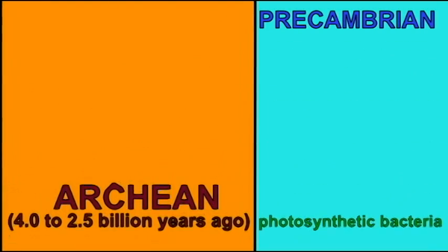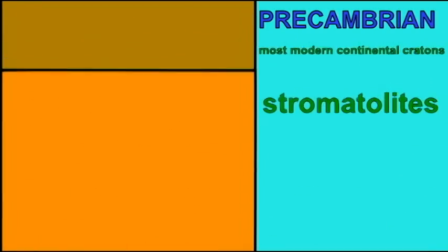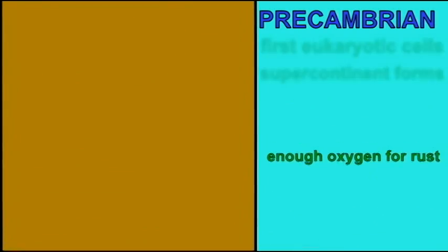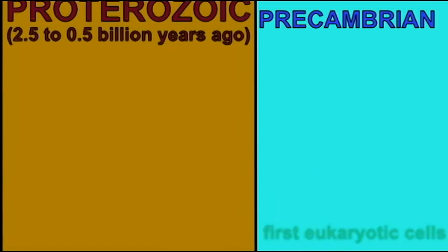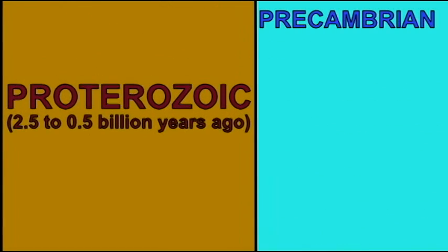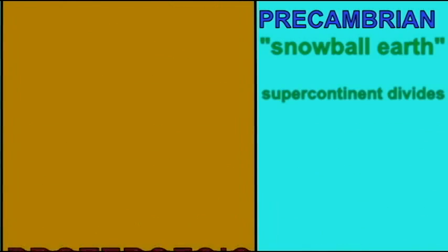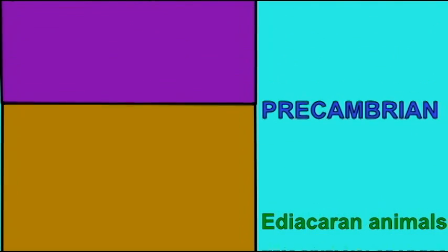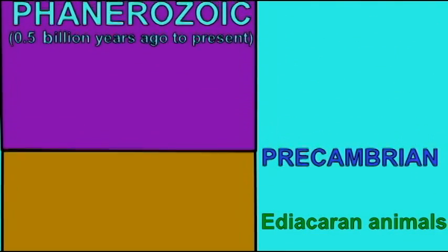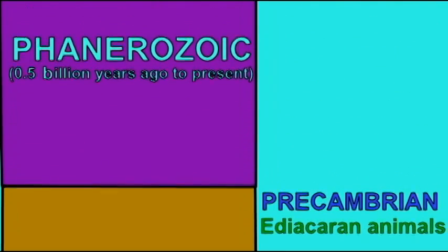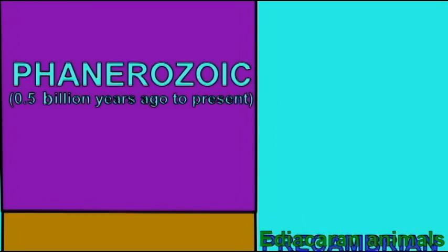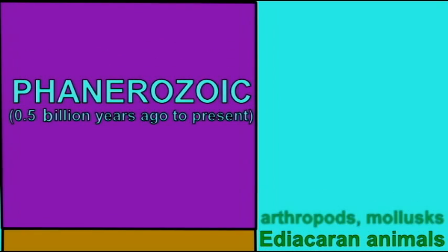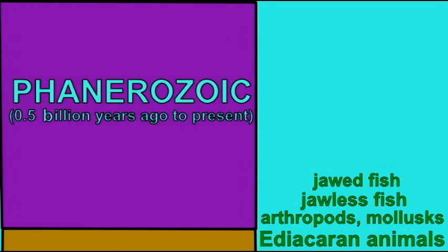Oxygen is added to the atmosphere as blue-green algae perform photosynthesis. And in an eon known as the Proterozoic, more complex cells known as eukaryotic cells are known. By the end of the Proterozoic, animals are known, and most of the fossil history of macroscopic animals is confined to the Phanerozoic eon.